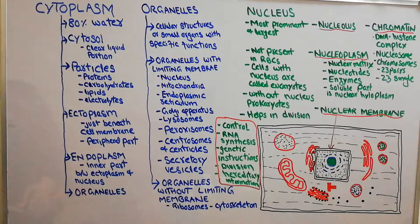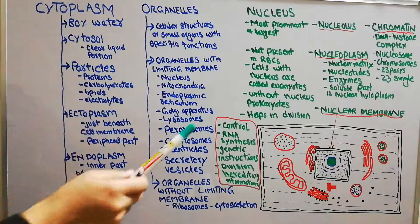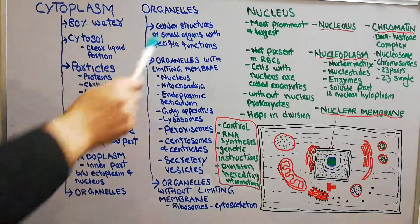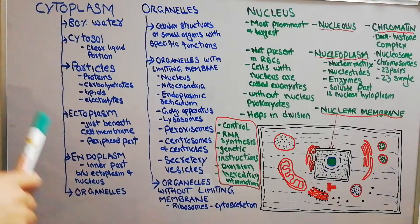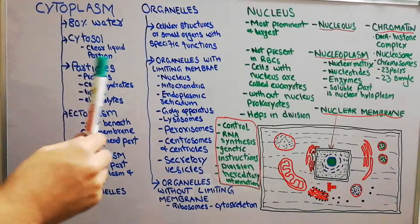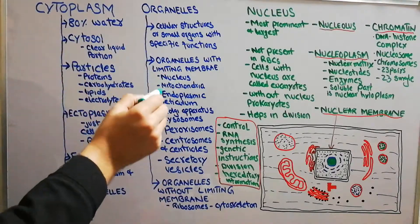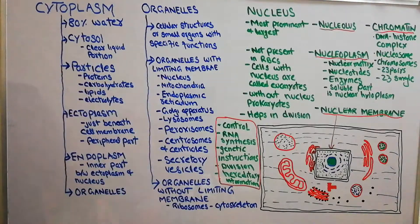Today we are discussing the nucleus. In the last lecture we discussed the cytoplasm — different portions and parts of the cytoplasm, the cell organelles present in it. We discussed that cytoplasm is made of cytosol and particles, has two portions: ectoplasm and endoplasm, and consists of small organelles of two types — those surrounded by a limiting membrane and those not surrounded by any limiting membrane. The biggest cell organelle is the nucleus, and today we are starting our lecture about it.